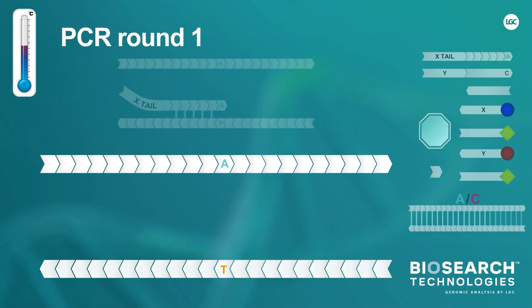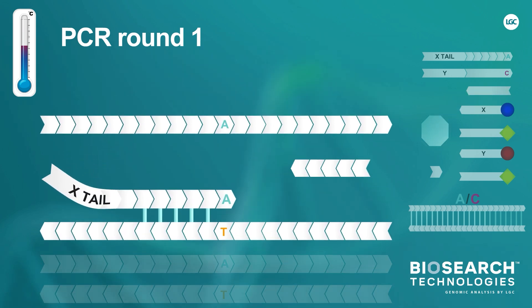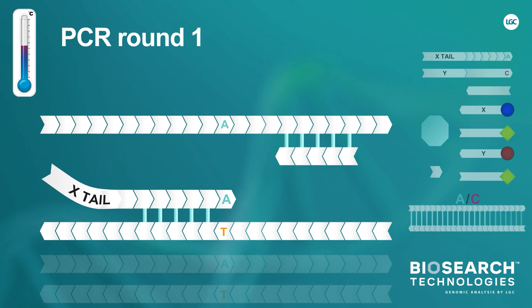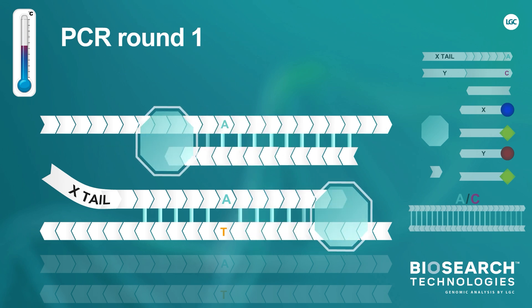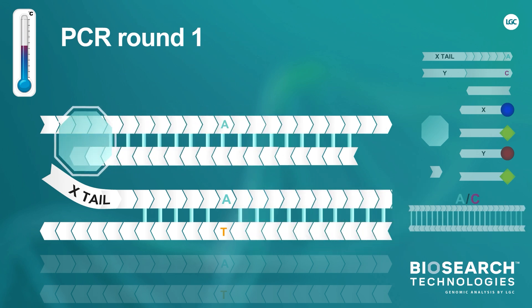During this stage of the PCR, the common reverse primer will also bind to the template DNA. After the complementary primers have annealed to the template DNA, the CAASP TAC will begin to extend. At the end of CAASP PCR round 1, the region of template DNA containing the target SNP will have been copied. The tail sequence that is part of the allele-specific primer will not have been copied, but will have become incorporated into the PCR product.